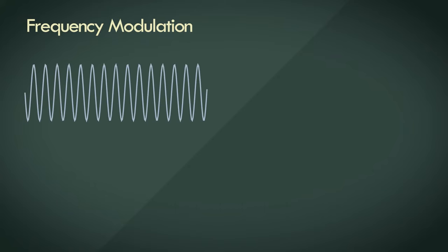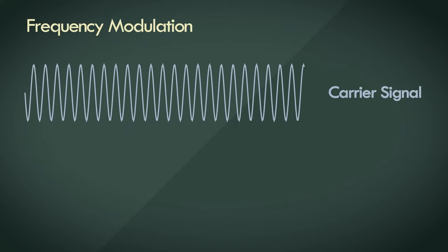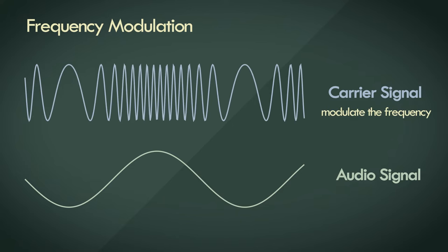We start with a really high frequency carrier wave, which is going to carry our music, which is going to be encoded within it. We modulate the frequency parameter of this carrier wave, corresponding to the instantaneous changes in amplitude in the music signal. Essentially, the change in amplitude of the music is encoded as change in frequency within the carrier.